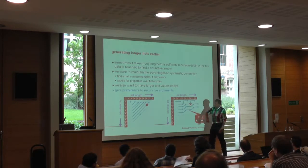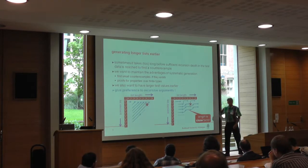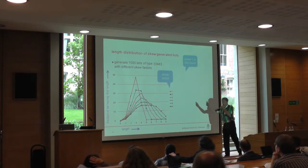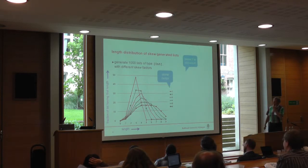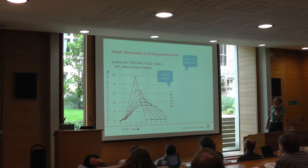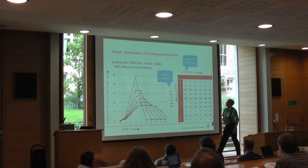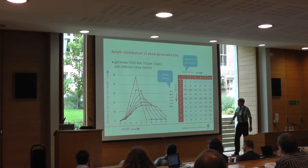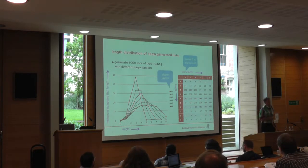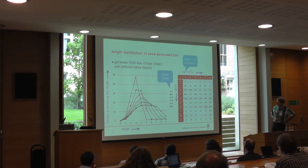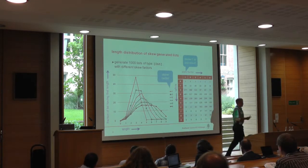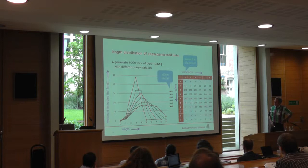Instead of doing it in a fair way, I do it in a skewed way — I call this the skew factor. If I measure the length of the next generated list, this is my old situation. Now with a thousand test cases, if I increase the skew factor, the lengths of lists occurring in my test set become longer and longer, giving a fairer distribution over list lengths.